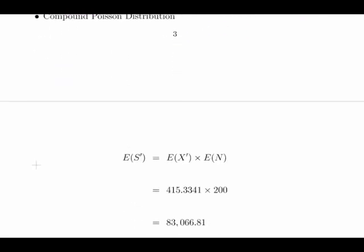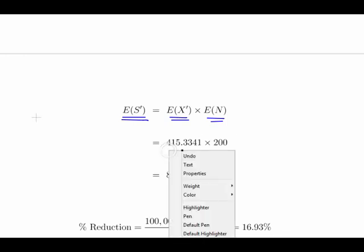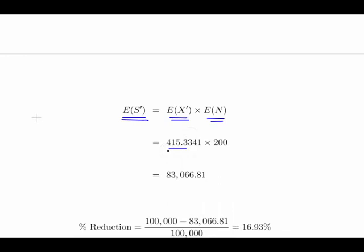Now compound Poisson process. So the expected value of the total aggregate sum is the new mean times the expected number of cases. The new mean is 415, we expect 200 cases. So that works out to be 83,066.81. That's the cost if we introduce that excess.